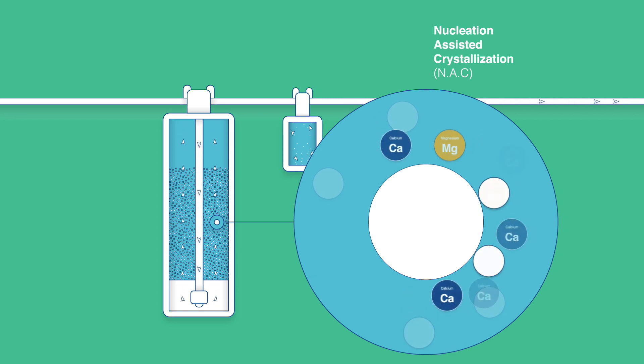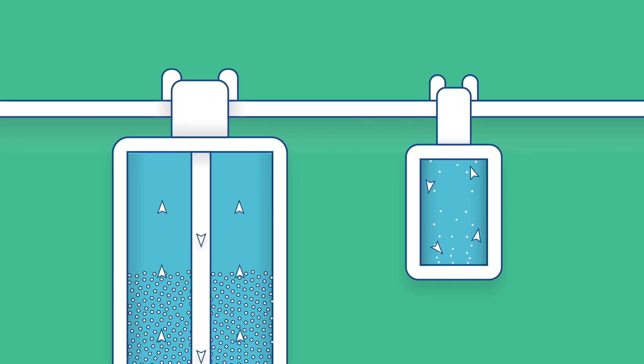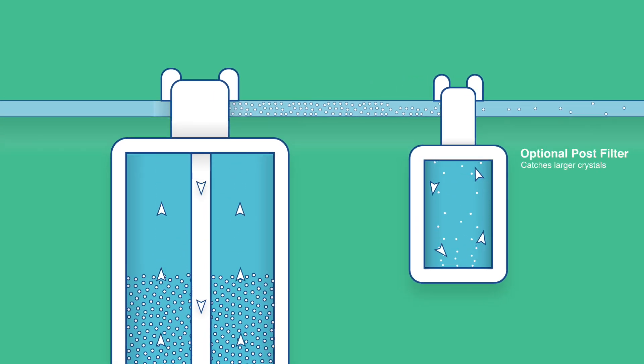harmless nanocrystals form on the surface of each bead. These harmless crystals then fall off the beads back into the water, where they flow through a post filter, which is designed to catch any large crystals that form.